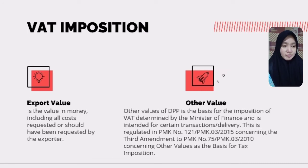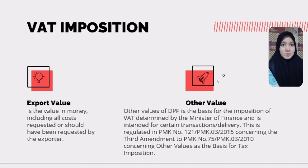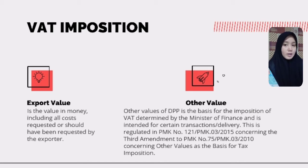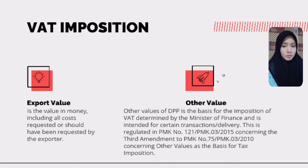Next is about VAT imposition. There are two types. The first is export value. Export value is the value in the form of money that must include all costs and requests, or costs that must have been requested by the exporter. All value in money related to the export must be included in the export value.